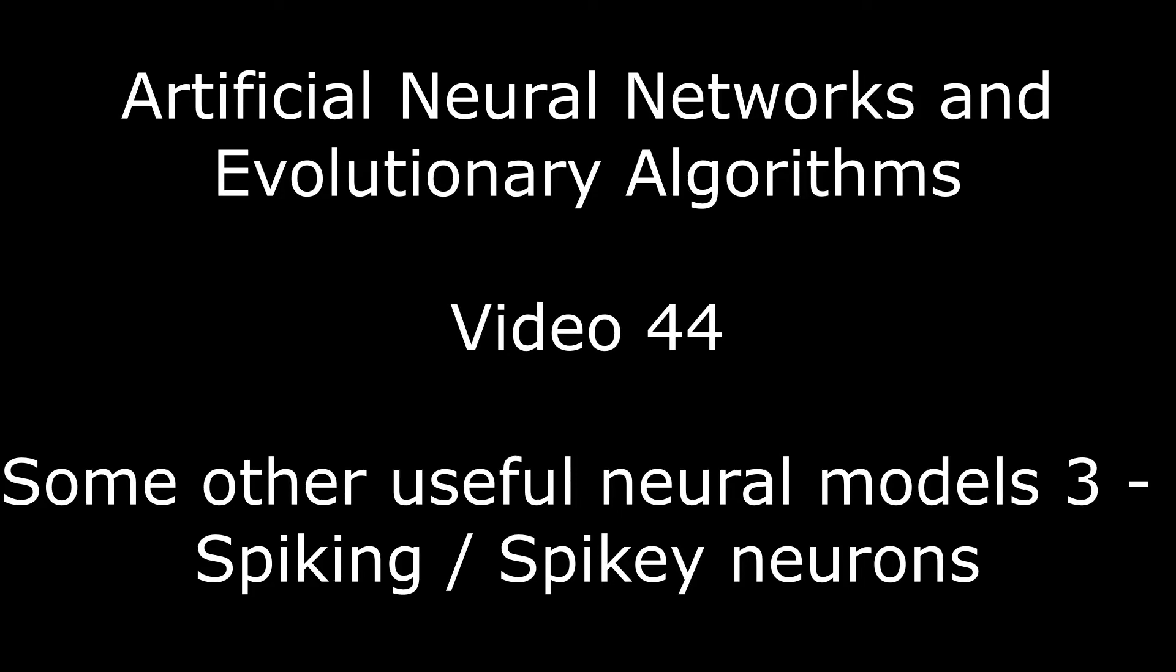All of the neurons which we've studied in detail so far have encoded their outputs as variations in amplitude, either as a binary signal, as is the case with a threshold squashing function, or as a continuously varying output, as in the case with a sigmoidal squashing function.